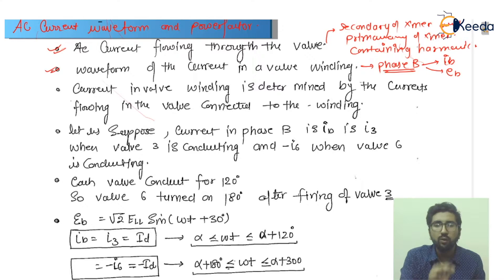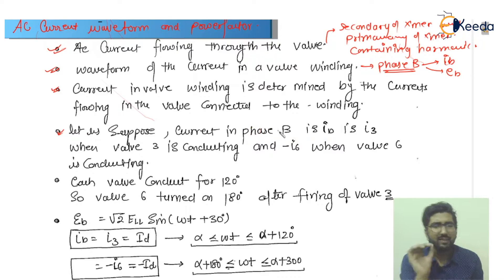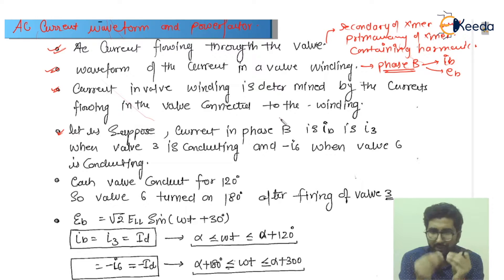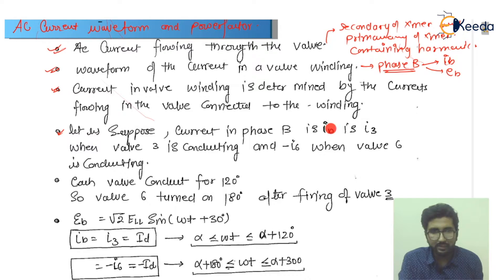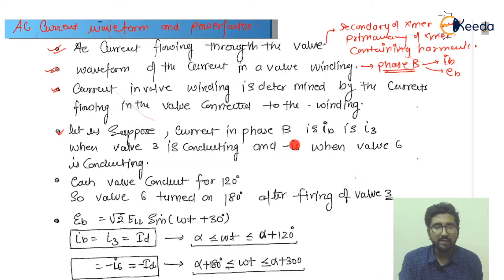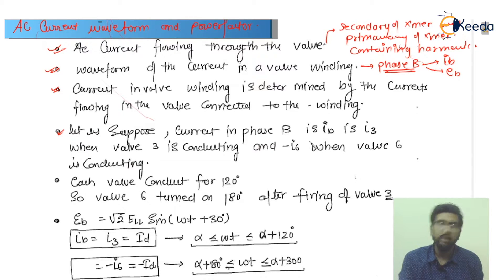The current in the coil winding is determined by the current flowing in the coil connected to the winding. Let us say the current in phase B is ib. Since we are operating thyristor number three, we consider ib as i3 when thyristor 3 is conducting, and minus i6 when thyristor number six is conducting — the opposite current is flowing, as we have seen in the diagram.